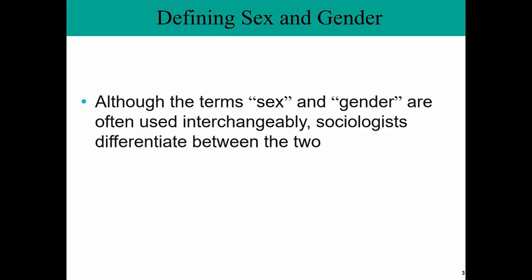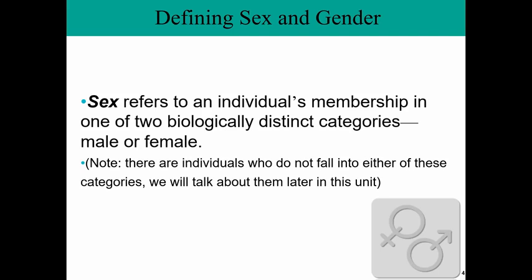In our language, the terms sex and gender are often used to mean the same thing, but sociologists and other social scientists do make a distinction between those two things — they are in reality very different terms. Sex refers to an individual's membership in one of two biologically distinct categories, namely being male or female. It should be noted that there are individuals who do not fall into either of these categories; these people are intersex, and we will talk about them in greater detail later in this unit.